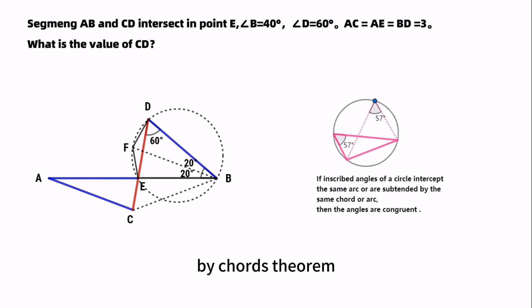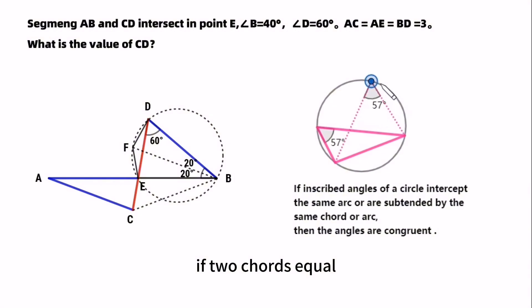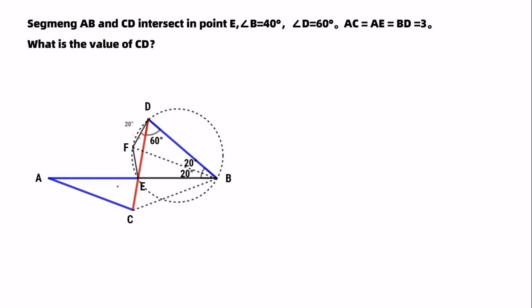By chord theorem, if two chords equal, so the subtended angles also are equal. So we can get angle FDE is 20 degrees. Also this angle FED is 20 degrees. So we can get these two segments DF is equal to EF.